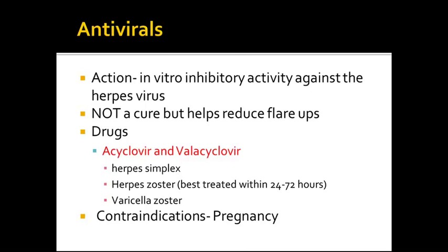Antivirals inhibit activity against the herpes virus. They are not a cure, but they help reduce flare-ups. Common drugs are acyclovir and valacyclovir — you can identify antivirals by the ending '-vir.' These treat herpes simplex 1 and 2, and herpes zoster (shingles), which is best treated within 24 to 72 hours of onset. Varicella zoster is typically prevented by the Zostavax vaccine. Antivirals are contraindicated in anyone who is pregnant.